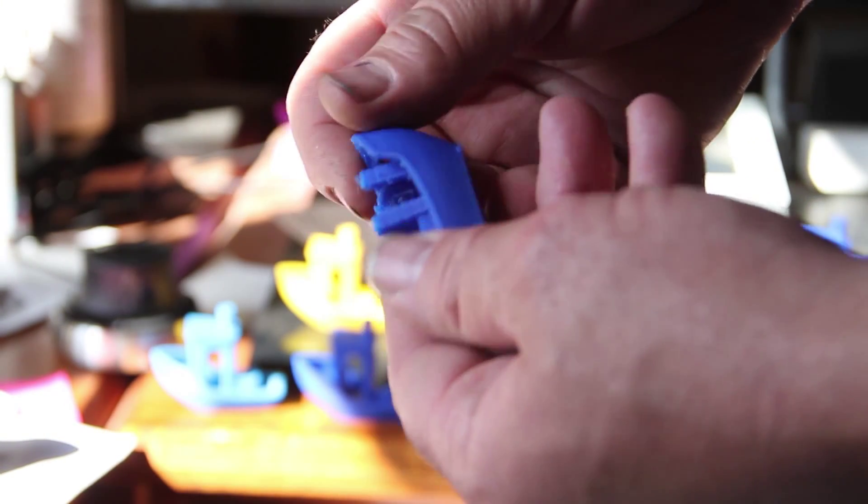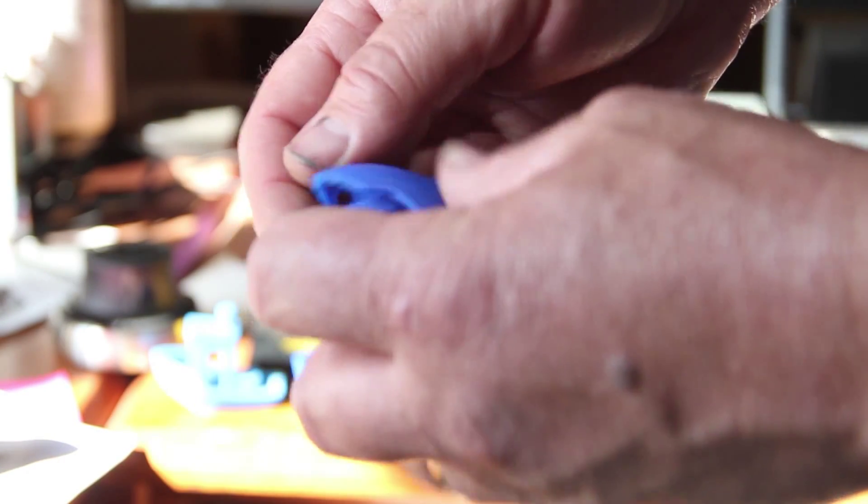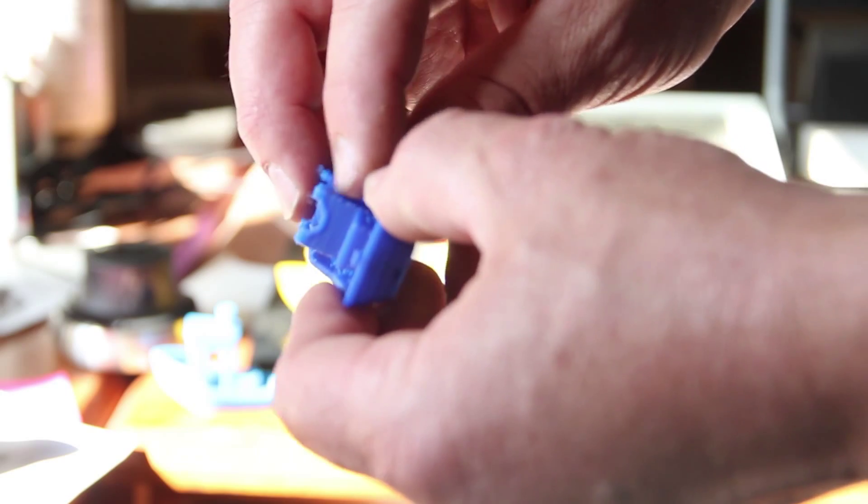So I went away and did a bunch of other stuff. I played around with the Ninja Flex which I'll show you here in a minute. And then when I came back to trying the Bowden and the PLA, I couldn't seem to get past this point right here. I'd reduced my extrusion multiplier down.